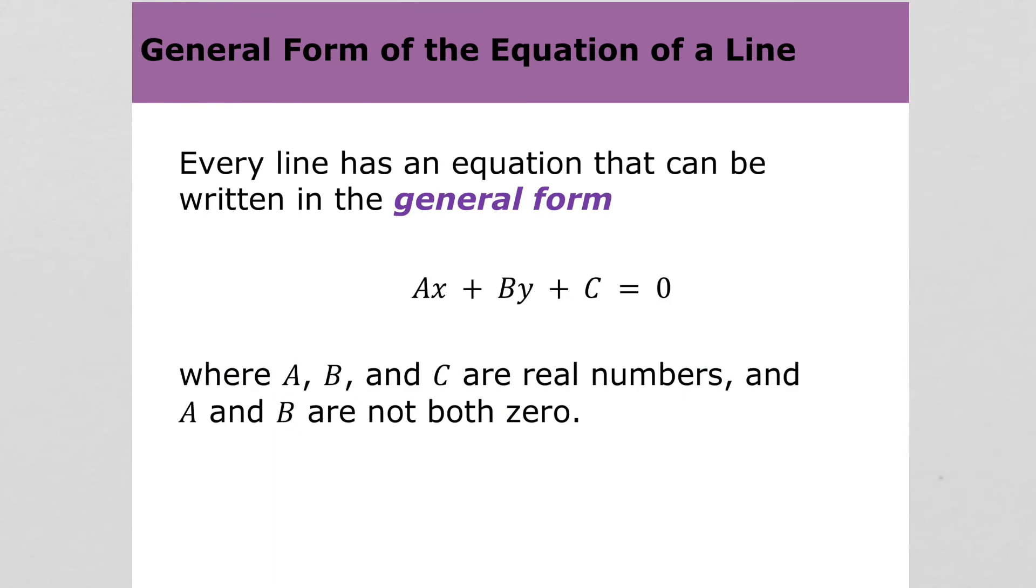The general form of the equation of a line looks like this: Ax plus By plus C equals 0. And when you're in the general form, you can't have a fraction, and the A value has to be positive. So if you're asked to put something in general form, make sure you don't have a fraction, and make sure you multiply by negative 1 if your A is negative.